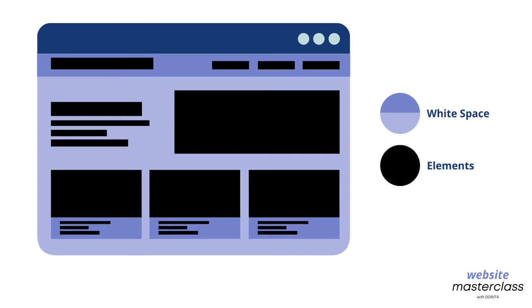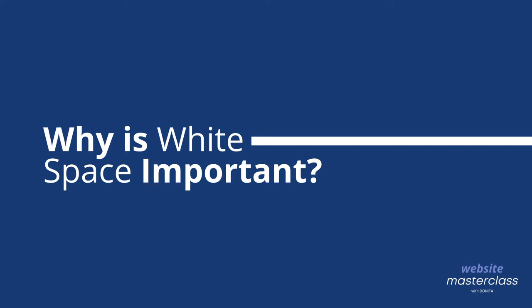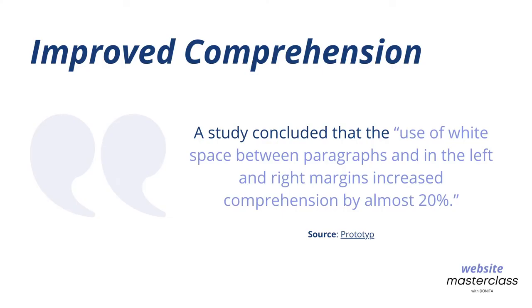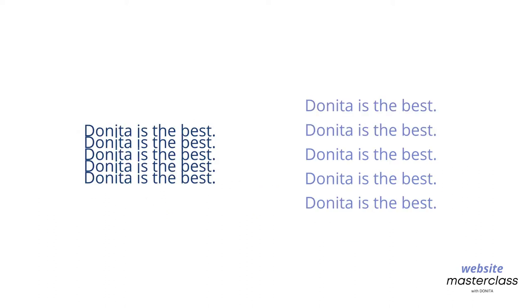The black represents the actual elements, for example images, shapes, and text. So why is white space important? One reason is that it improves comprehension. Having the right amount of white space enables website visitors to read content comfortably — the easier it is to read, the longer they will read. A recent study concluded that the use of white space between paragraphs and in the left and right margins increases comprehension by 20%. Which one is more comfortable to read? The second one, right? The first is all crammed together, hard to read and not visually pleasing, but the second you can read without any hassle.